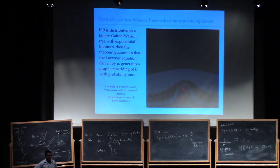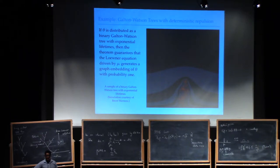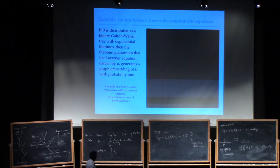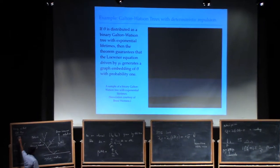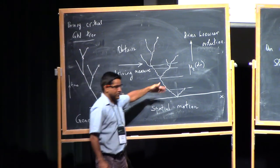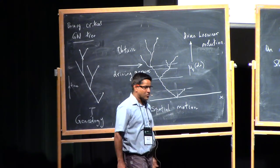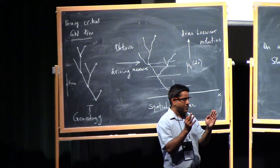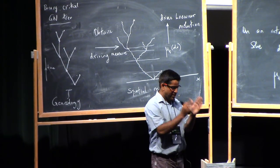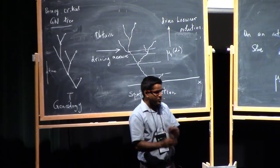Sigma is the variance of the branching mechanism that you choose. It's not related to the spatial motion in any way. The picture is always the same: branching process theory is worked out, and what I'm really doing is taking branching process theory and asking how do I choose a driving measure for the Loewner evolution that drives it.